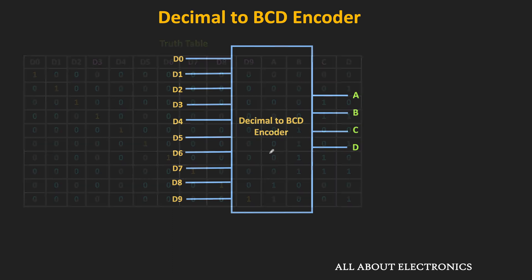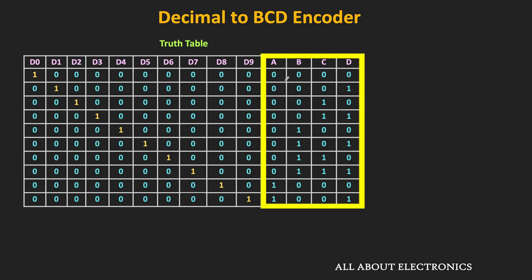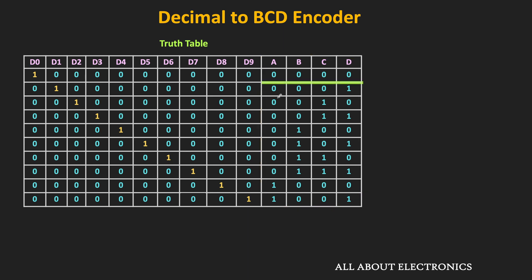Here is the truth table of the decimal-to-BCD encoder. Corresponding to each input, we get a 4-bit BCD code. When D0 is high, the BCD code is 0000; when D7 is high, the code is 0111; and when D9 is high, the code is 1001. From this truth table, we can design the logic circuit. Output A is high when D8 or D9 is high, so the expression for A is D8 + D9.